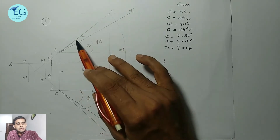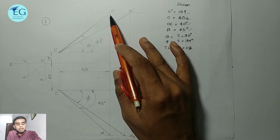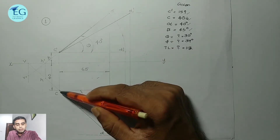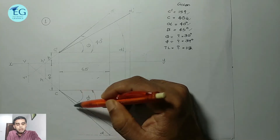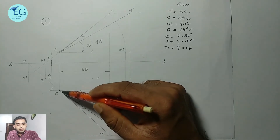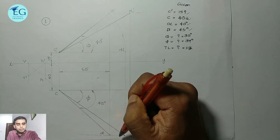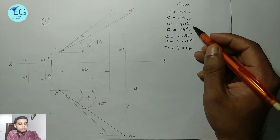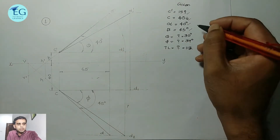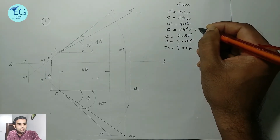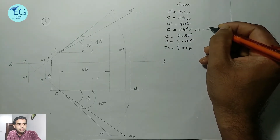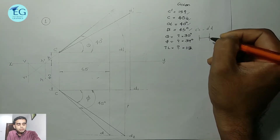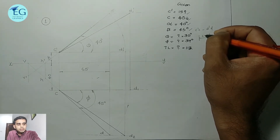We have the c dash d dash line where d dash length is at 40 degrees. The cd line is also at 40 degrees. The horizontal distance between the projectors c dash c and d dash d is 65 mm.